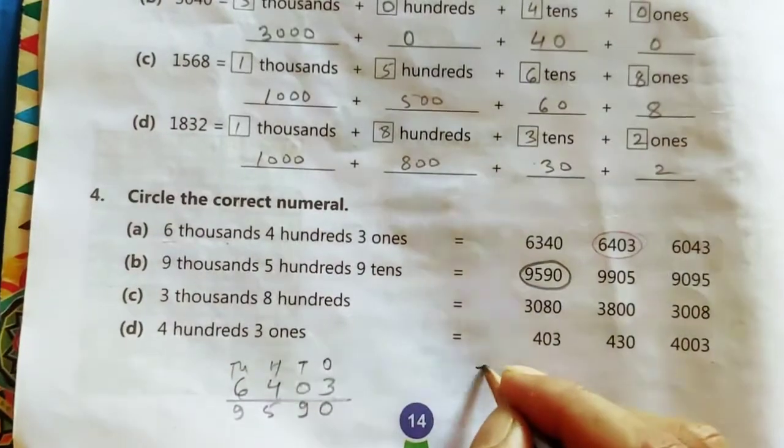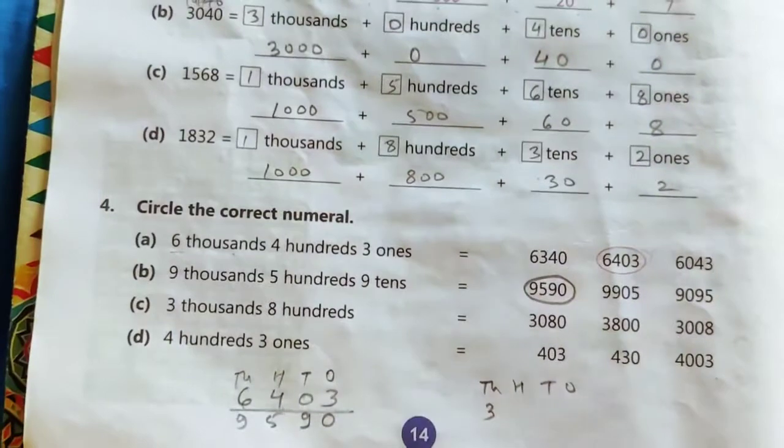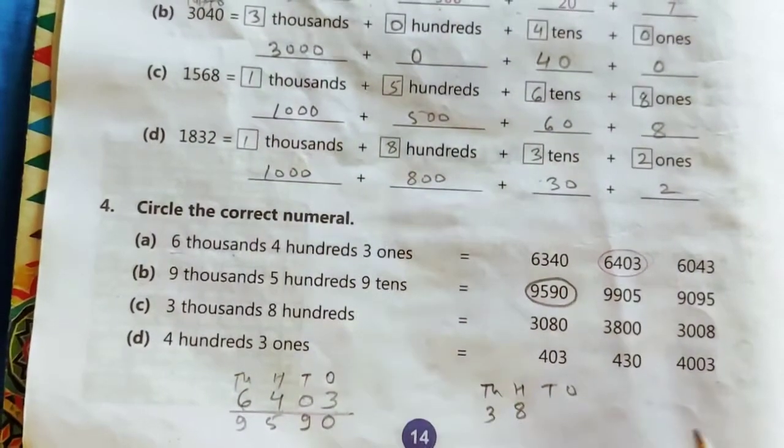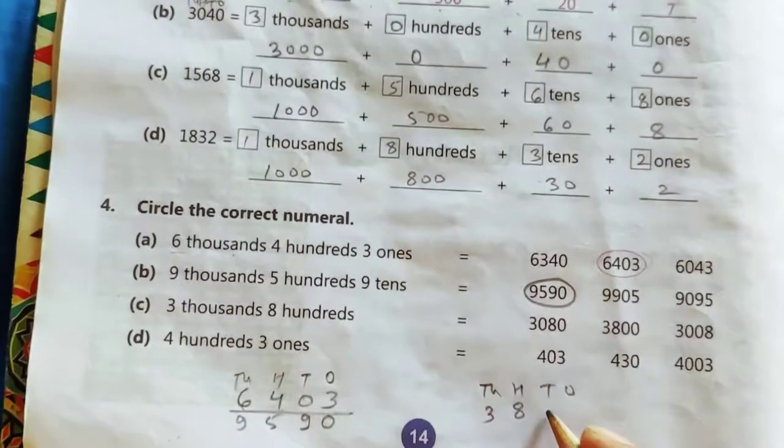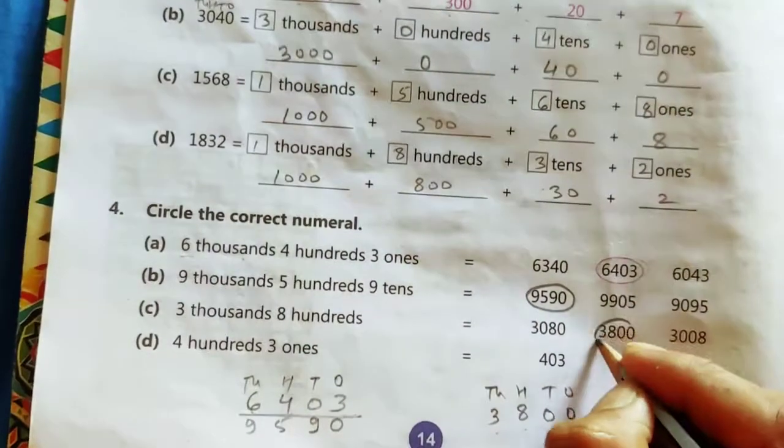In the same way, question number 3. 3,800. And that's it. Nothing is written in the tens place and ones place. So we will write 0 here. 3, 8, double 0. So this is our correct answer.